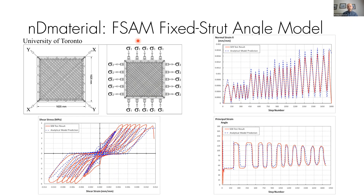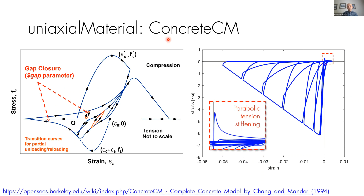The uniaxial concrete material Concrete CM is a Saatcioglu-Mander formulation. OpenSees didn't have a full implementation at the time. What's specific to this material model is its smooth transition curves and the ability to model gradual gap closure when concrete gaps are closing — many models don't have that and have very abrupt closure, which can affect your results. On the tension side, it has parabolic tension stiffening versus linear tension stiffening in models like Concrete02.